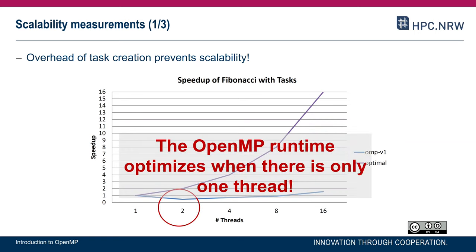With version OMP-V1, we see a slowdown with two threads and only a minor speedup of about 1.5 with 16 threads — certainly disappointing. The execution with one thread is actually better than with two threads because the OpenMP runtime can avoid a lot of overhead with only one thread. This explains the slowdown at two threads and only very minor increases from 2 to 4 to 8 to 16 threads.